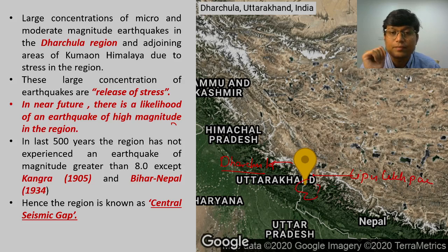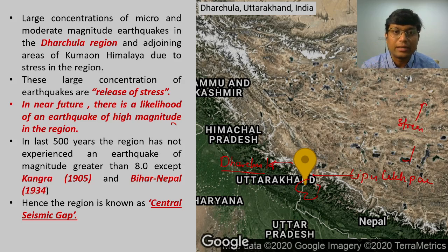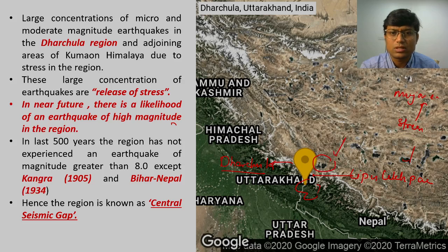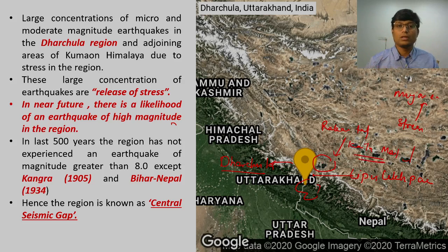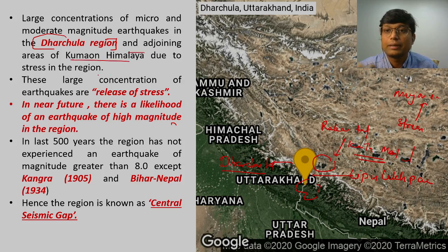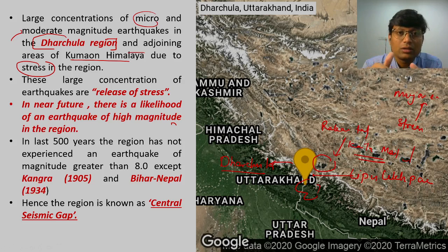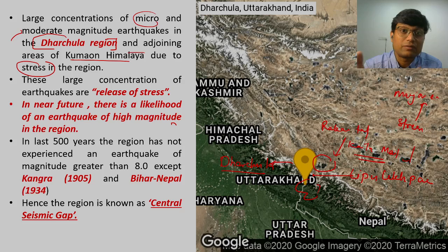Along this particular stretch, seismologists from the Wadia Institute are predicting that stress is building up and that stress could lead to a major earthquake. Two important map entries in this area are Rakastal on the left and Kailash Mansarovar lake. This Dharchula region and adjoining areas of Kumaon Himalaya are witnessing micro and moderate magnitude earthquakes due to stress. Whenever two plates collide, at places they get into a locking position, and as a result of that locking they build up a significant amount of stress, which when released causes an earthquake of any intensity.